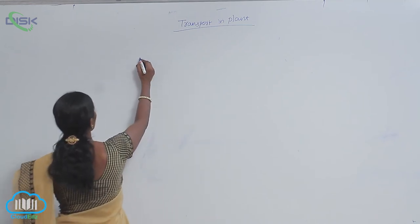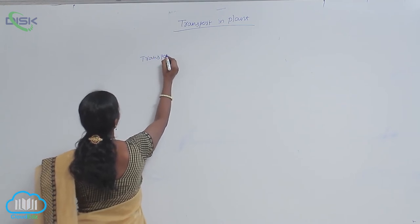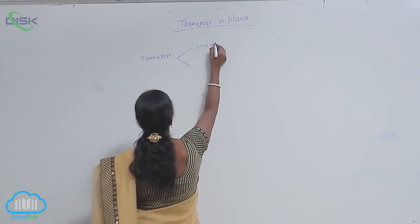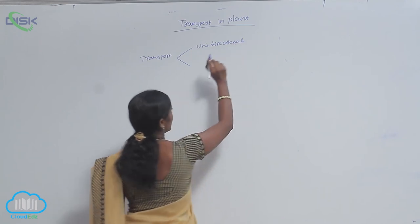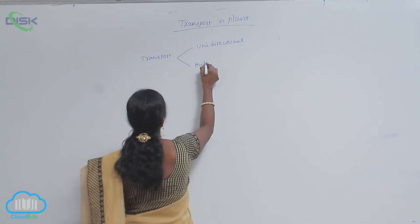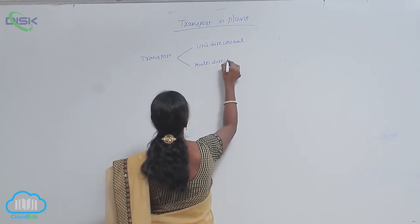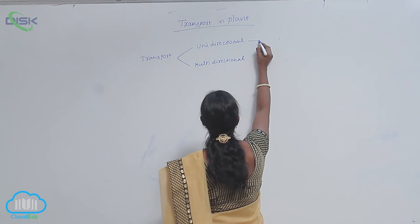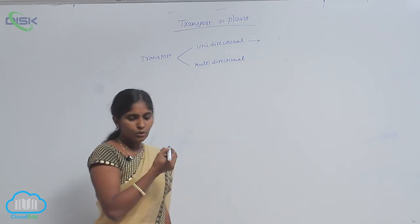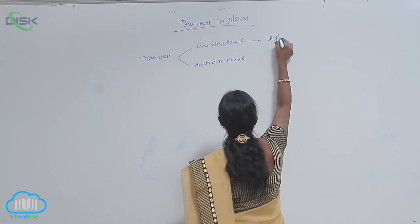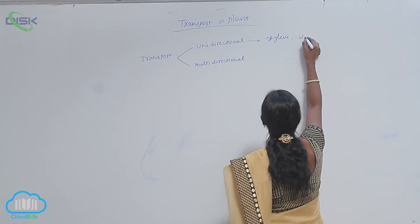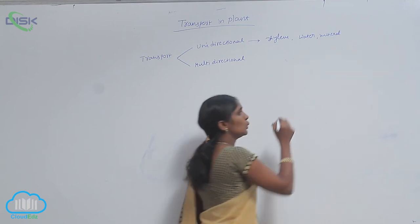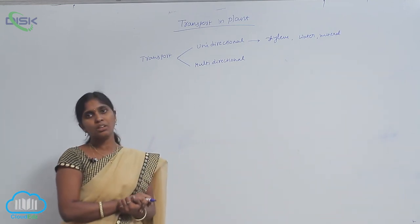Transport in plants may be of two types: one is unidirectional and another one is multidirectional. In xylem, for example, the water and minerals are strictly transmitted in one direction — unidirectional.